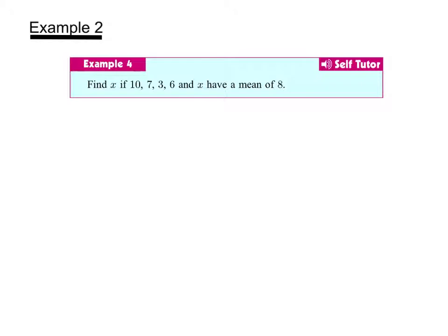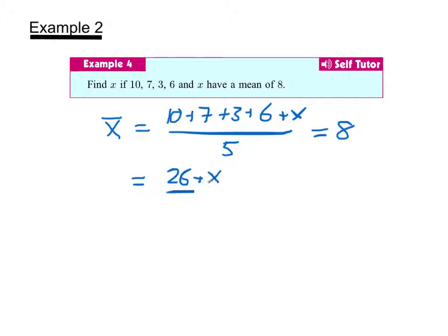Let's take a look at another example. I'm asked to find x if 10, 7, 3, 6, and x have a mean of 8. The mean is the sum of all the data values divided by the number of data values, which is 5. In this case that equals 8. With simplification, we have 26 plus x over 5 equals 8, so 26 plus x equals 40. If we subtract 26 from both sides, x is 14.